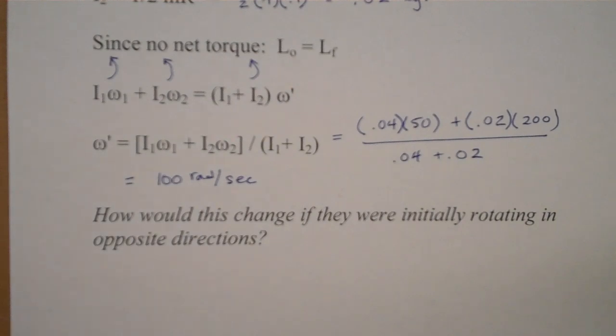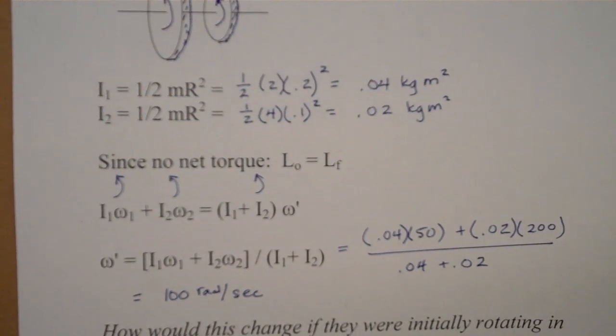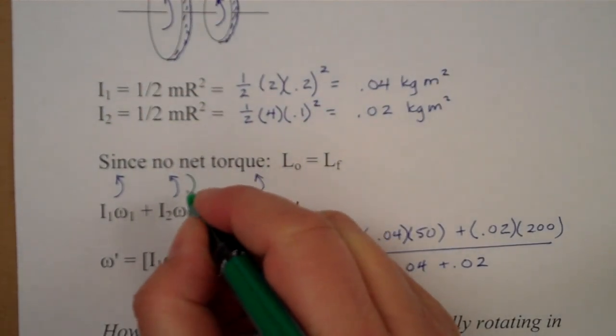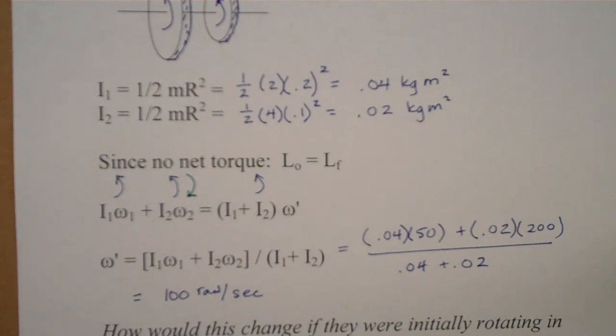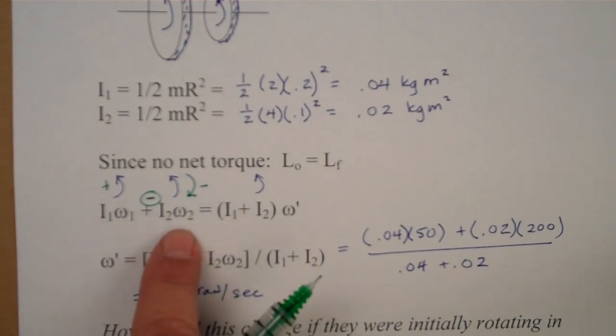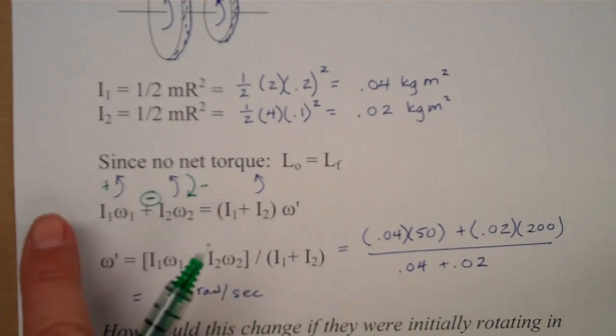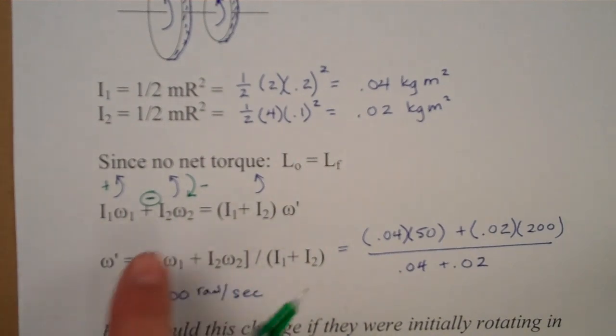Now, there's an added question here. How would this change if they were initially rotating in opposite directions? So, in that case, let's make the second one go in the opposite direction, so going clockwise instead of counterclockwise, and don't forget that that would indicate a change in sign. So, one of these would have positive rotation, the other one would have negative rotation, and then we would need to see which one wins out, which one has a stronger angular momentum, and if the clockwise is stronger than the counterclockwise, then we expect that one to win out.